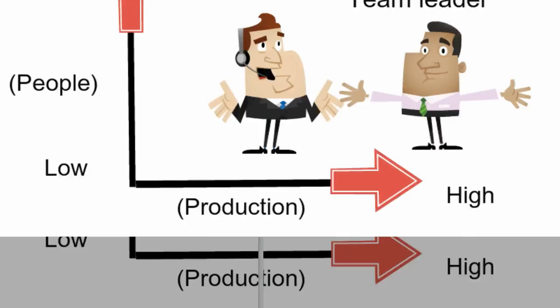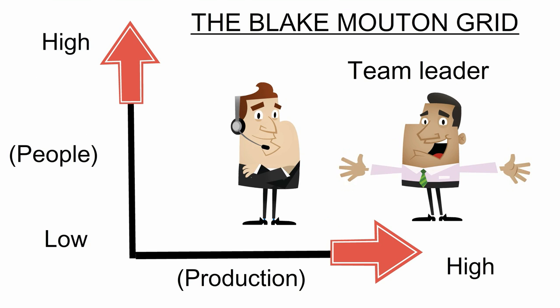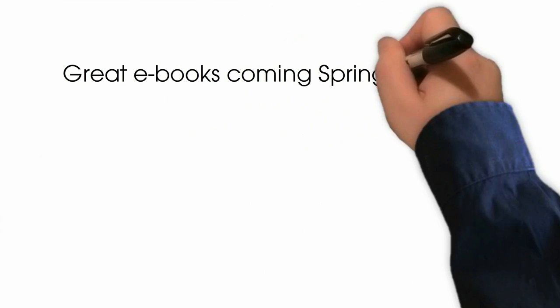Team Leadership. Production and people are given equal priority. This leader encourages people to feel that they can make a valuable contribution to achieving objectives. Managers try to empower and motivate teams to achieve targets, and also make sure employees are looked after.